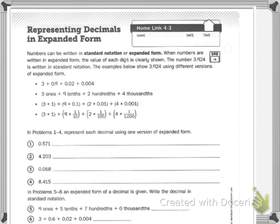Then I'll do another page for 5 through 8. It says numbers can be written in standard notation or expanded form. When numbers are written in expanded form, the value of each digit is clearly shown. Remember, standard notation is how we write numbers normally. Expanded form shows the value of each digit clearly.